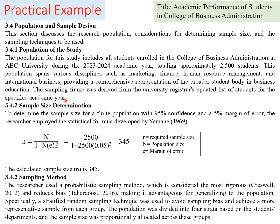The sample size can be determined using the Yamane formula because the population is already known. Since the population is 2,500 — a large number requiring large costs and time for a census — we use sampling. With a finite population of 2,500, 95% confidence, and a 5% margin of error, using the Yamane formula, the researcher gets a sample size of 345.